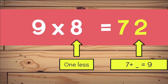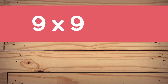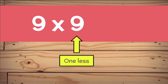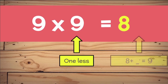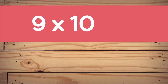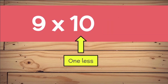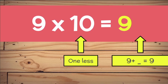9 times 9. 1 less than 9 is 8. And 8 plus 1 more gives us 9, so 9 times 9 equals 81. 9 times 10. What's 1 less than 10? 1 less than 10 is 9. And 9 plus what gives us 9? 9 plus 0 equals 9. So 9 times 10 equals 90.